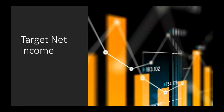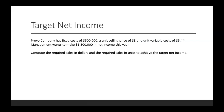Let's work through a target net income example problem. Provo Company has fixed costs of $500,000, a unit selling price of $8, and unit variable costs of $5.44. Management wants to make $1.8 million in net income this year, so we need to compute the required sales in dollars and the required sales in units to achieve that target net income.